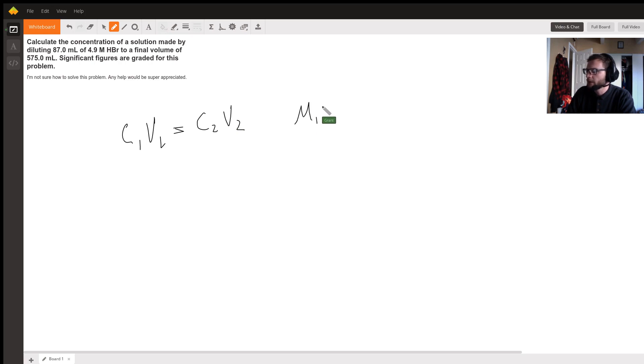Sometimes you'll see it as M1V1 equals M2V2 and that's because M stands for molarity. So molarity is a concentration. Molarity times volume equals molarity times volume.